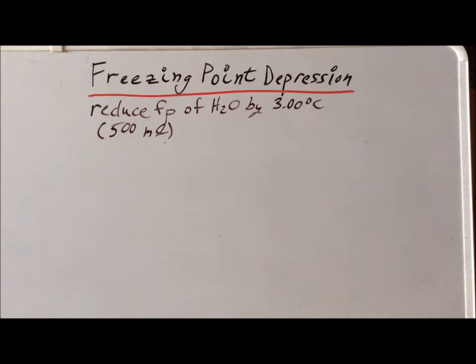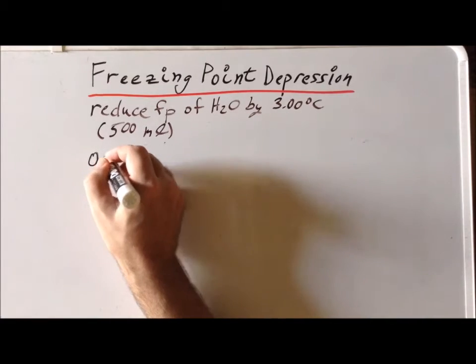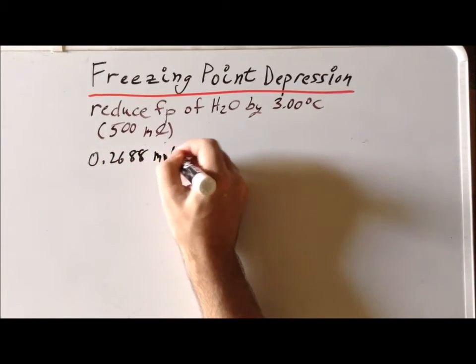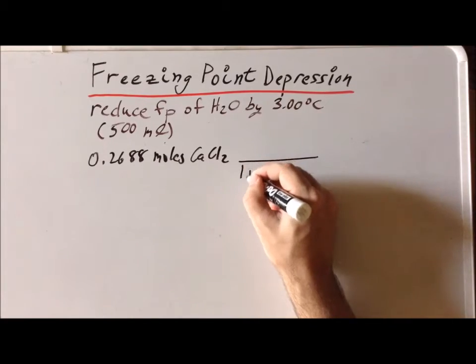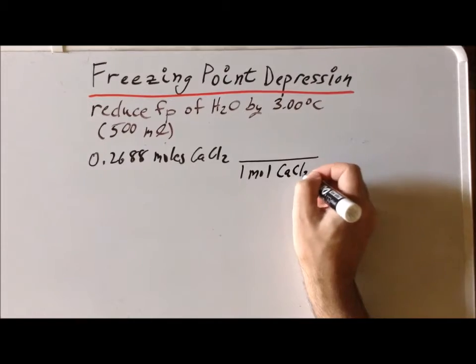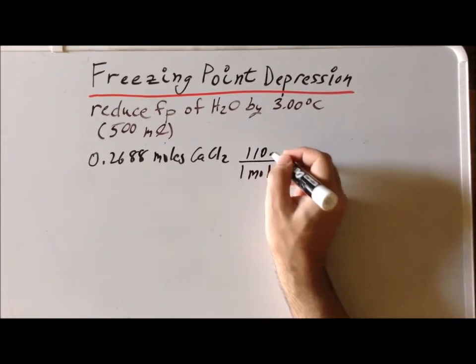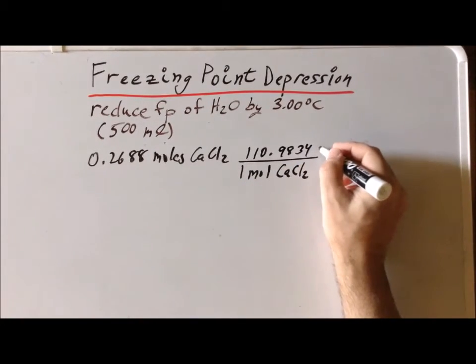Once we have determined exactly how many moles of calcium chloride will be required, we only have one step remaining. We have to convert from moles of calcium chloride to grams of calcium chloride, because none of the balances that we're going to find in our laboratory will ever weigh things out in moles. They'll only weigh things out in units of mass, like grams. So we have 0.2688 moles of calcium chloride. We're assuming we're using an anhydrous calcium chloride here. The molar mass of calcium chloride, the mass of one mole of calcium chloride, we would determine to be 110.9834 grams of calcium chloride.